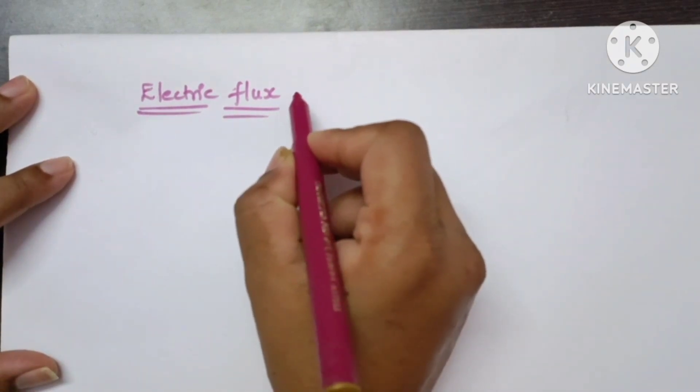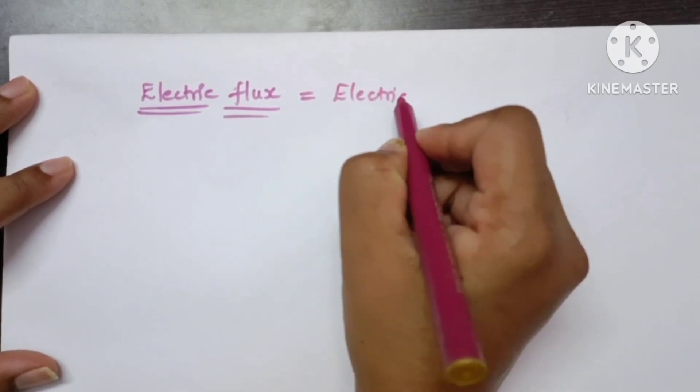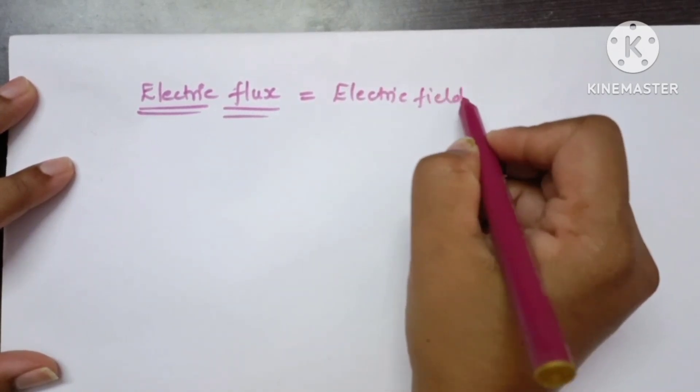The formula for electric flux is electric field into area.